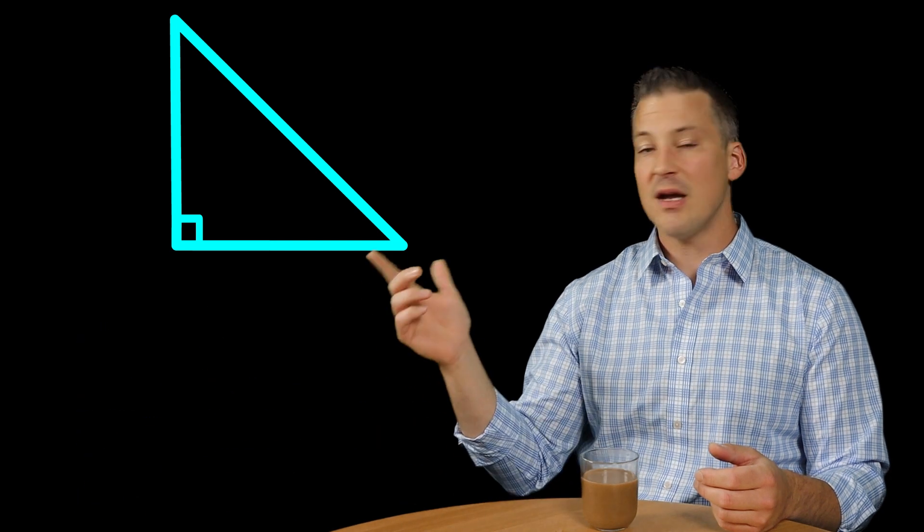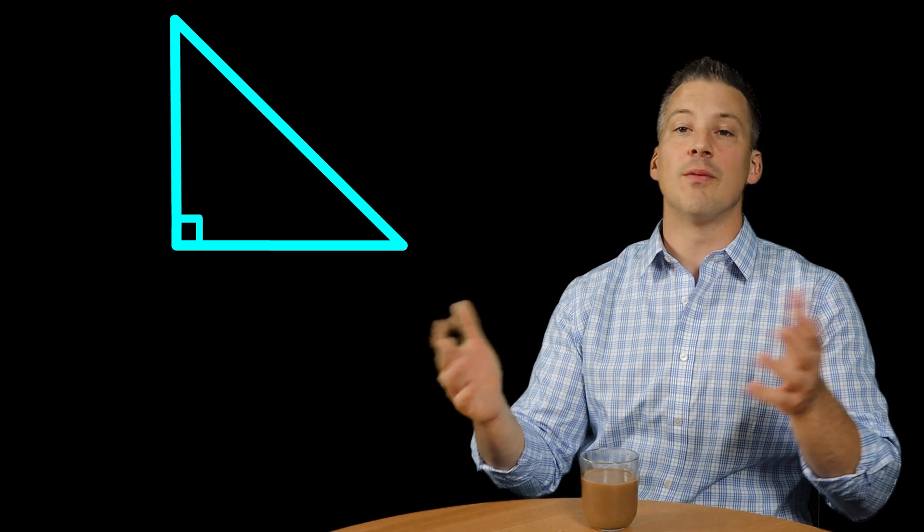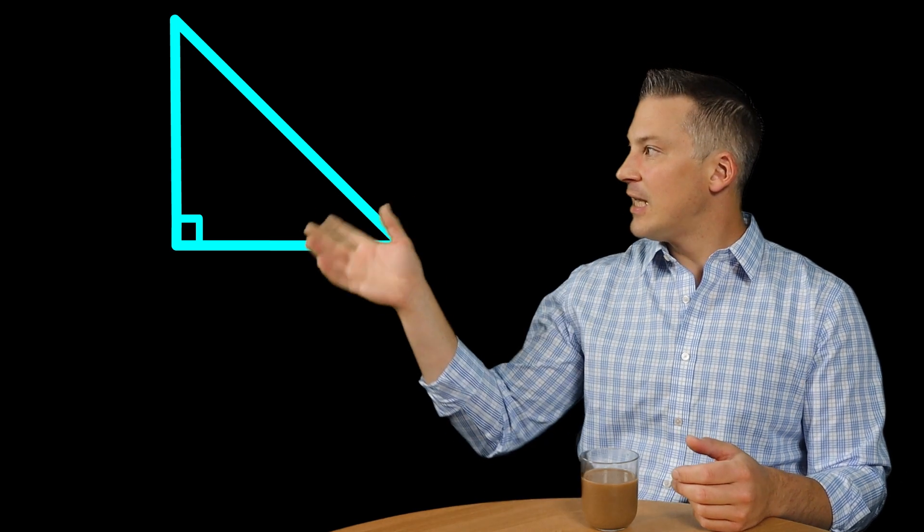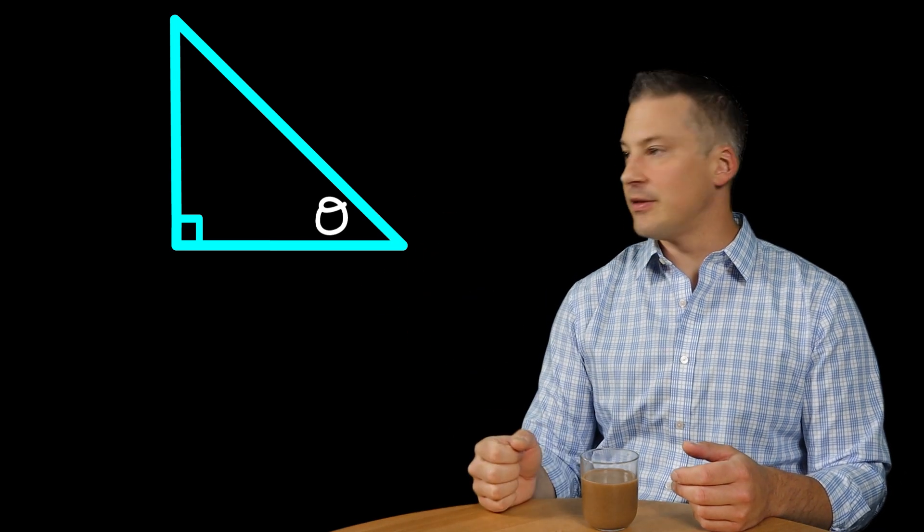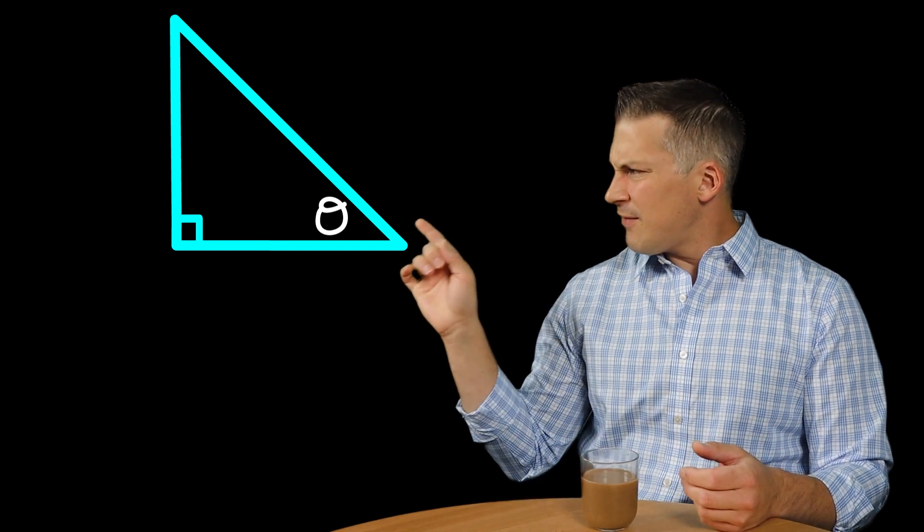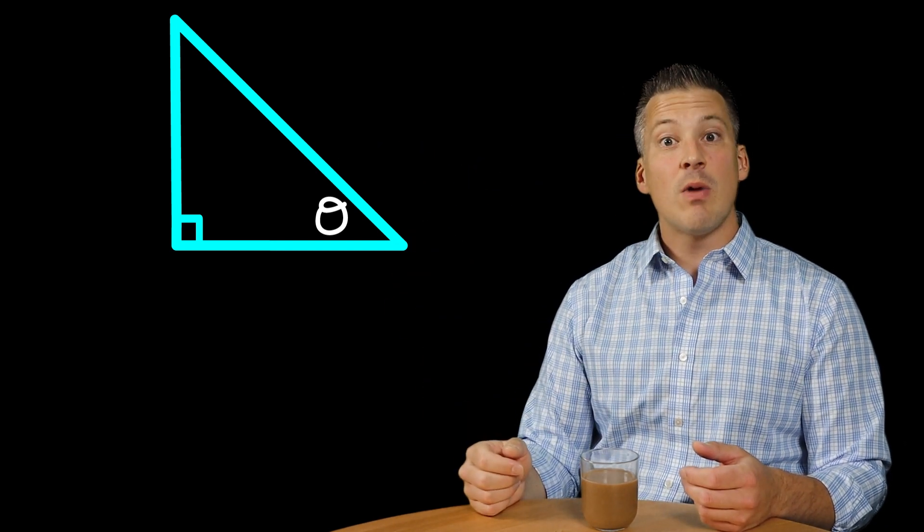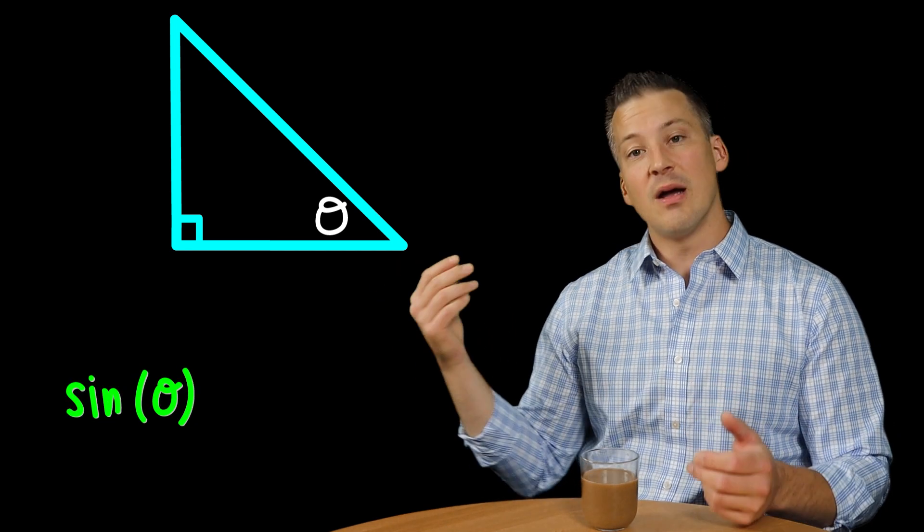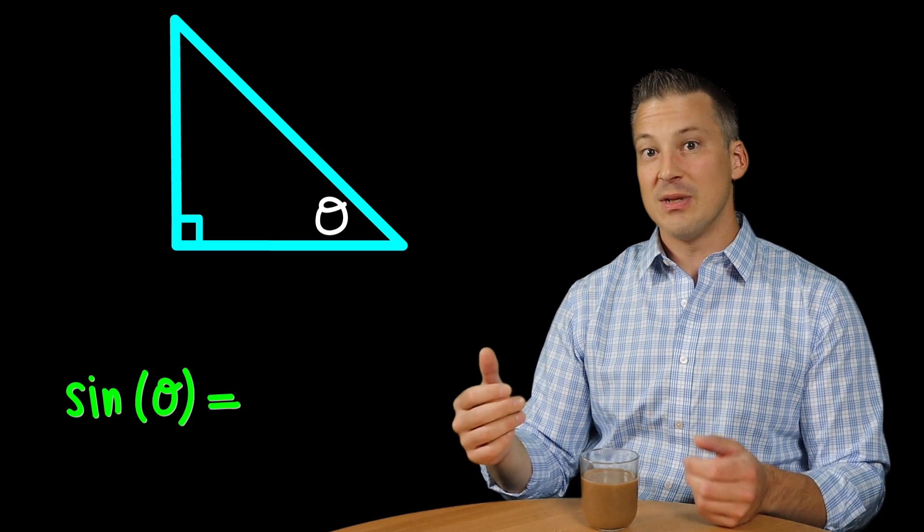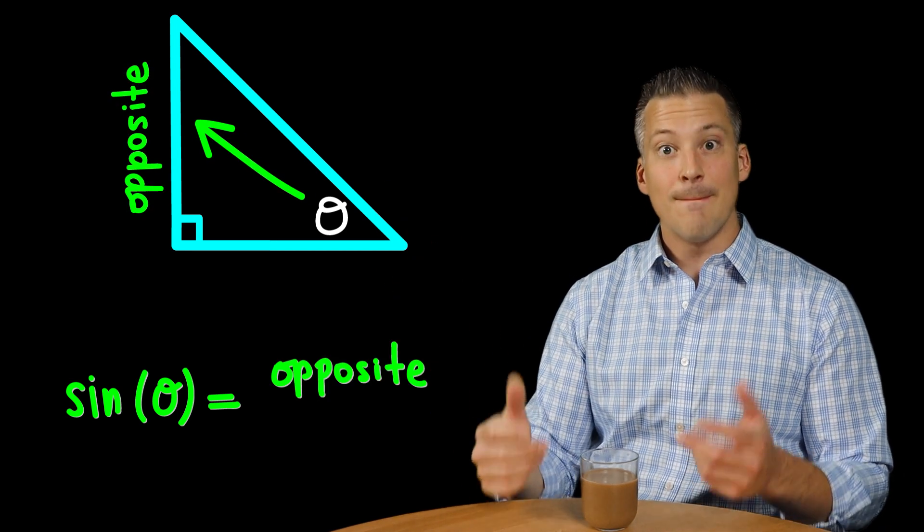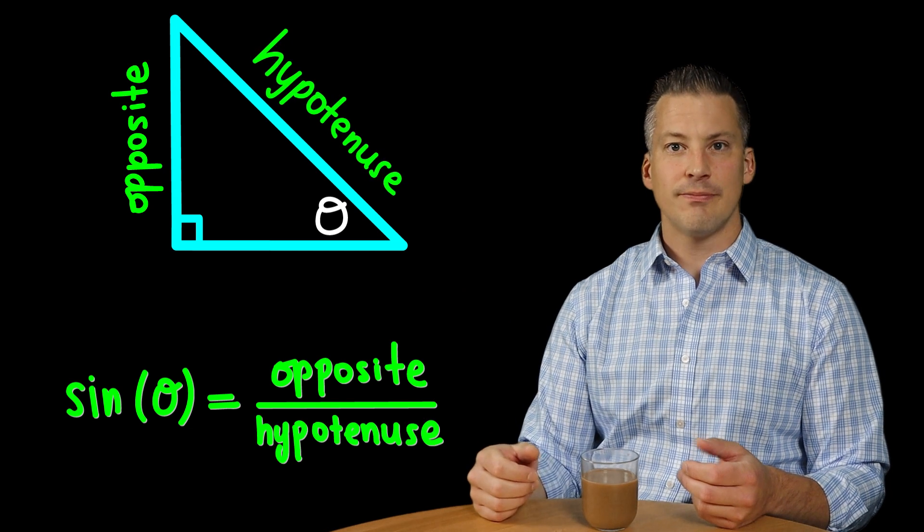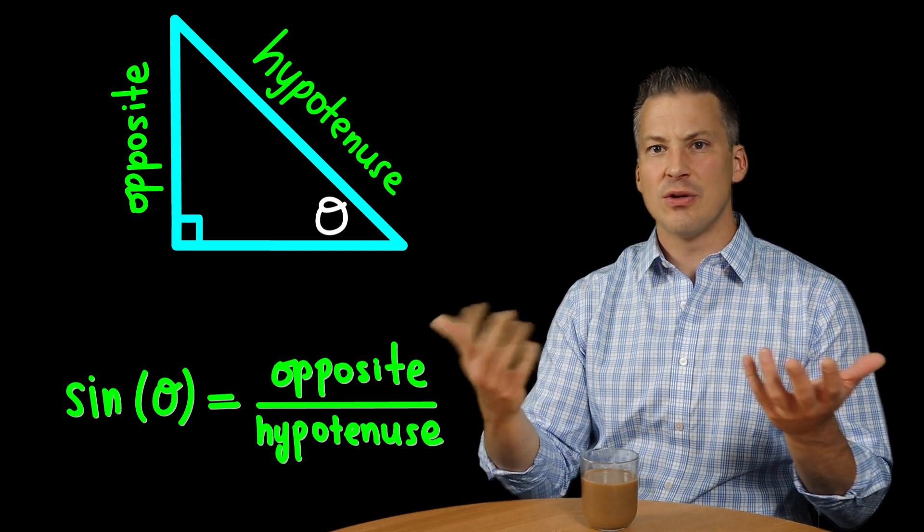Now, the sine of an angle. All these formulas are in reference to a particular angle inside of that right triangle. So let's just say we want to reference this angle right here and we'll call that theta. If I'm referencing this angle right here and I want to talk about the sine of that angle, all the sine of that angle is is simply going to be the opposite side of that angle's measure divided by then the measure of the hypotenuse. That's it. Sine is equal to opposite over hypotenuse.